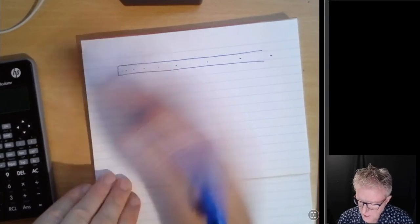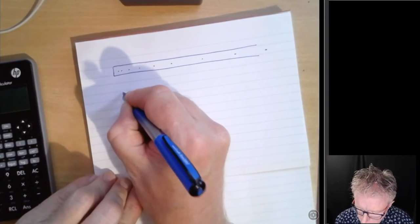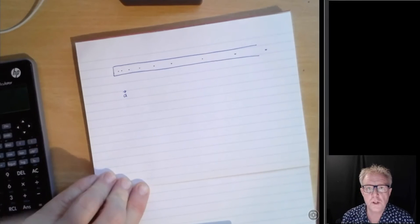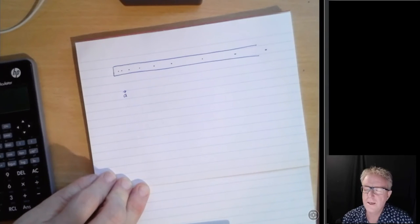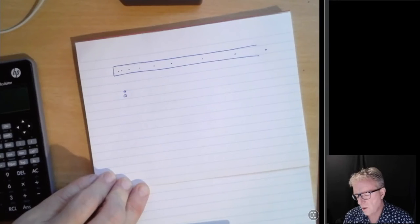Now, the first thing here to remember is that acceleration is a vector. So we put a little arrow over the top. And remember, a vector is a quantity that has both size and magnitude, sorry, size, that is magnitude, and direction.